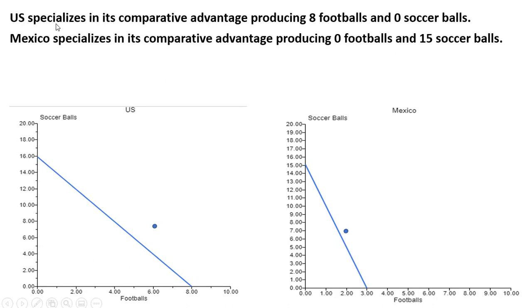So the US is going to specialize in its comparative advantage, producing footballs. In that case, it's going to produce 8 footballs and 0 soccer balls. Mexico will specialize in its comparative advantage, producing nothing but soccer balls — so 15 soccer balls and 0 footballs.